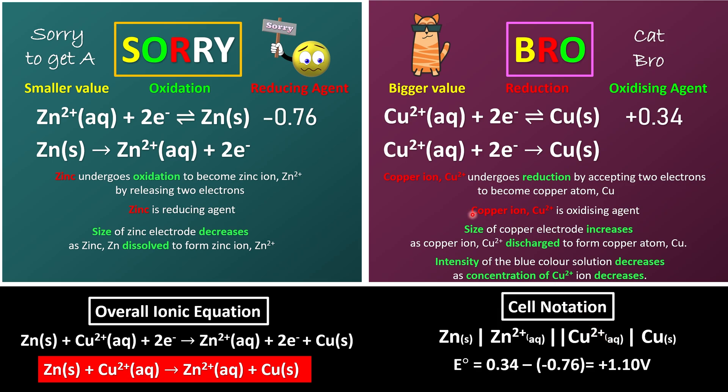And please remember that whenever we have a smaller value, reverse your equations. Why it's so important is because if you don't reverse it, you will get everything wrong. As we can see here, zinc 2+ ion is not the one that undergoes oxidation, but instead it's zinc solid that undergoes the oxidation. So this is why it's very important for you to reverse the equations once we know who is saying sorry.